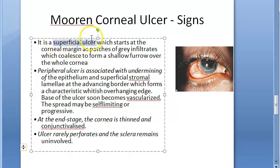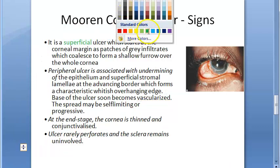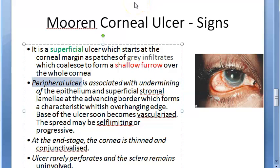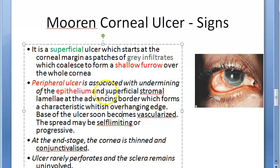Looking at the signs: it is a superficial ulcer that starts at the corneal margin as patches of gray infiltrates, which coalesce to form a shallow furrow over the whole cornea. Remember 'furrow' — shallow furrow, superficial gray infiltrates. The peripheral ulcer is associated with undermining of the epithelium and superficial stromal lamellae.